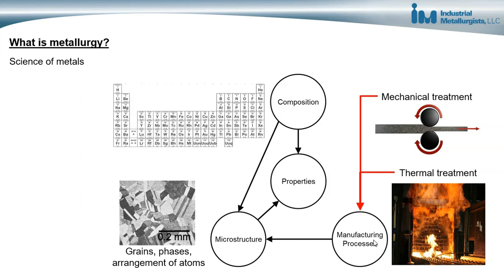Composition refers to the elements that are present in the metals. For example, in steel alloys, the composition would consist of iron, carbon, manganese, maybe silicon, maybe some nickel or chromium. And brass alloys might consist of copper and some zinc, and maybe some other alloying elements added.